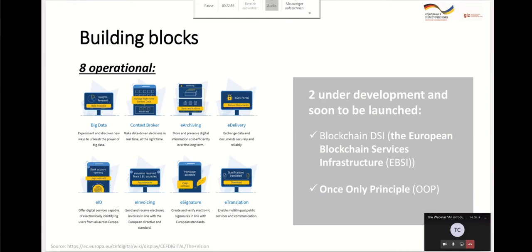EID infrastructure gives you the ability to provide identification services for citizens to third parties. For example, a government body or local municipality that would like to implement their own public service solution does not need to implement EID in each piece of software — you can delegate identification of citizens to the government service. There are standard protocols and approaches that give you the ability to delegate identification to one government service. As an example of document exchange, machine-readable e-invoicing will be presented.